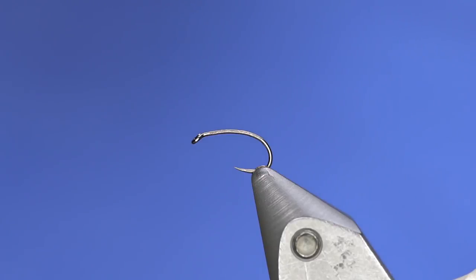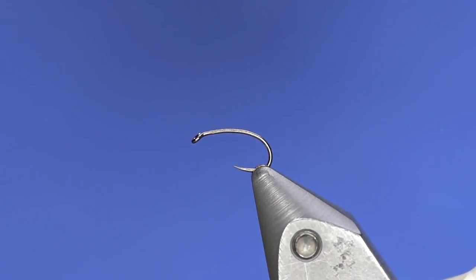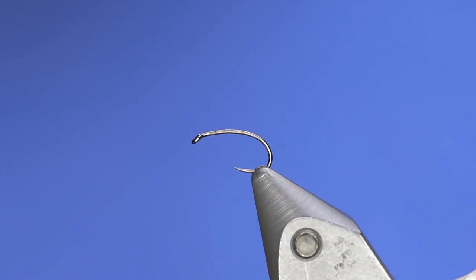So I'll tie this most often in sixteens and even as small as eighteens, not so much, but definitely sixteens and fourteens. I've got my Hanak 333 in here, it's a Czech style nymph. These are great for chronomids because of the gradual progressive bend there.